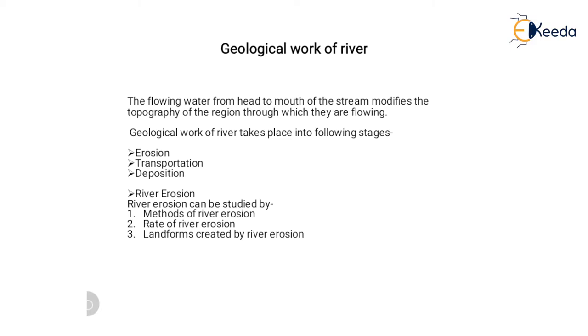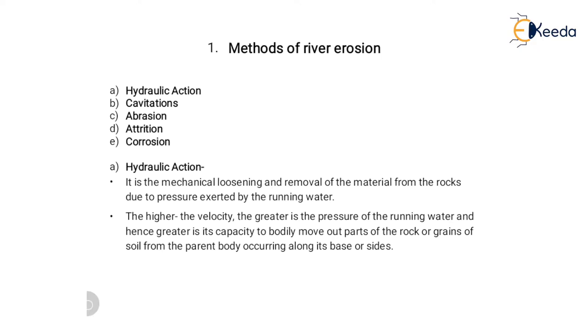River erosion can be studied by the method of river erosion, the weight of river erosion, and the landforms created by river erosion. The methods of river erosion are: hydraulic action, cavitation, abrasion, attrition, and corrosion.